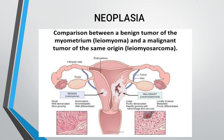Here we can see the comparison between the benign tumor of the myometrium and the malignant tumor of the same myometrium: leiomyoma versus leiomyosarcoma. In benign, they are small, well differentiated, slow growing, non-invasive, and non-metastatic. In malignant leiomyosarcoma, they are large, poorly demarcated, rapidly growing with hemorrhage and necrosis, locally invasive, metastatic, and poorly differentiated.